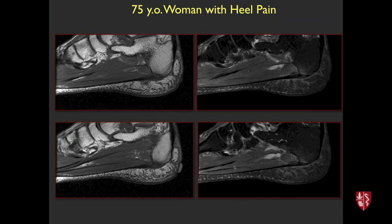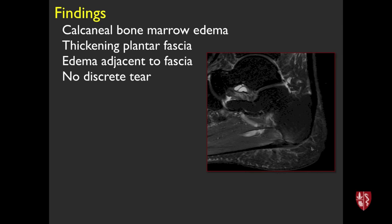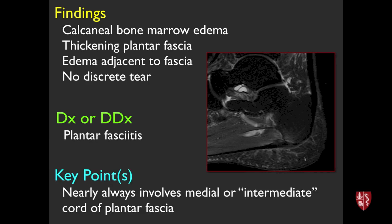75-year-old woman with heel pain. There's bone marrow edema in the calcaneus, thickening of the plantar fascia, and edema adjacent to the fascia without a discrete tear — plantar fasciitis. This almost always involves the medial or intermediate cord of the plantar fascia rather than the lateral, and tends to be proximal. Commonly associated with a little reactive bone marrow edema.